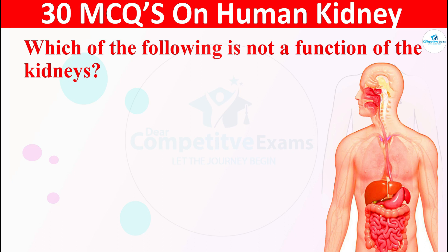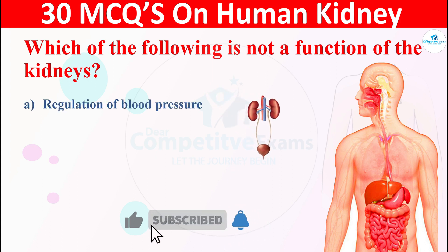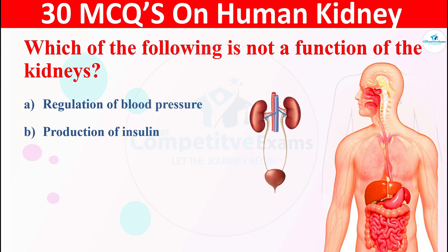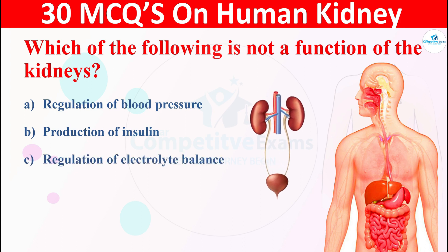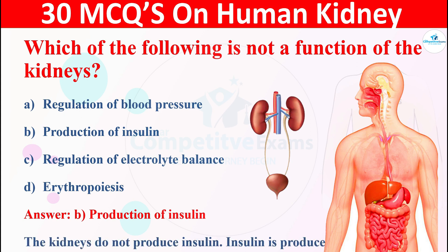Question 2: Which of the following is not a function of the kidneys? The options are: A) regulation of blood pressure, B) production of insulin, C) regulation of electrolyte balance, or D) erythropoiesis. The right answer is B, production of insulin. The kidneys do not produce insulin because insulin is produced by the pancreas.